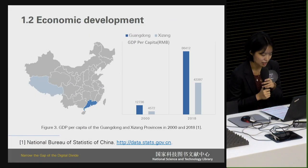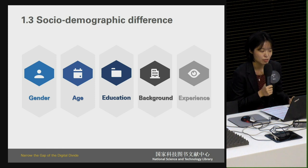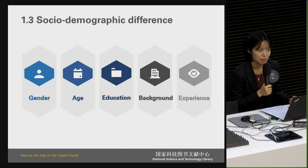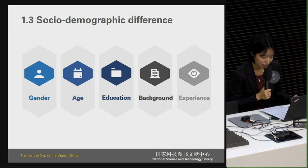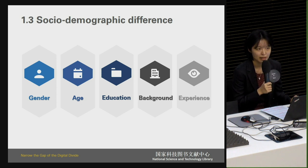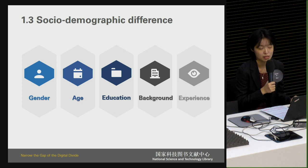This is the economic divide. Furthermore, sociodemographic differences are also vital causes to the gap. Even in rapidly developing cities, individuals due to gender, age, education background, and experience also have uneven access to information. So the reasons for the digital divide in mainland China can be summarized into three points: geographic, economic, and sociodemographic.